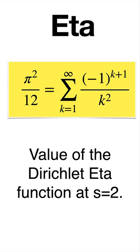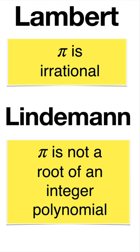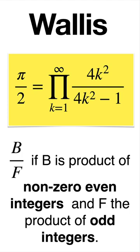Pi is irrational and transcendental, not the root of an integer polynomial. It balances the product between even and odd integers.